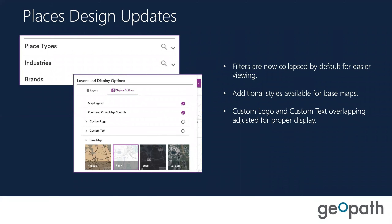In the Places area — that's our point of interest module — there are a couple of updates. When you get into the tool and search for something like Starbucks or Marriott, the filters are all now collapsed by default, which makes for a nicer user experience. Also, as you're able to create custom maps for members, there are more base maps available. Previously there was just light and satellite, and now there's antique and dark. Depending on the inventory you're mapping and the colors you're using, you may want to choose a different base map.